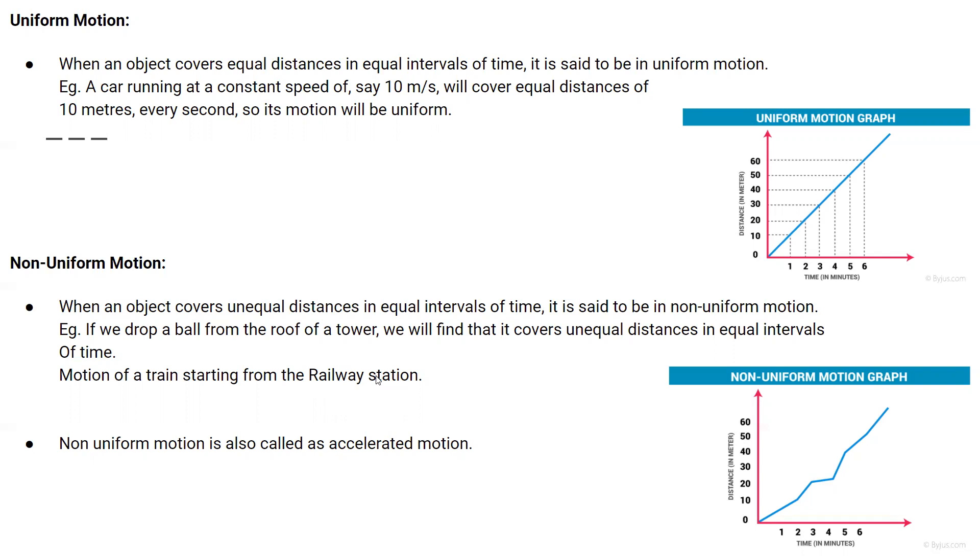Where there is more traffic, the time period is the same but the distance covered is reduced. If there is less traffic, then the distance covered increases. So this type of motion is known as non-uniform motion.